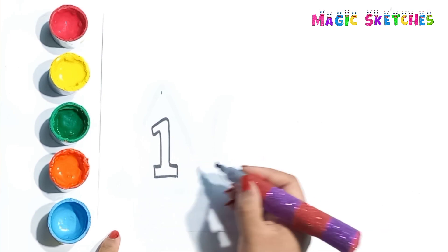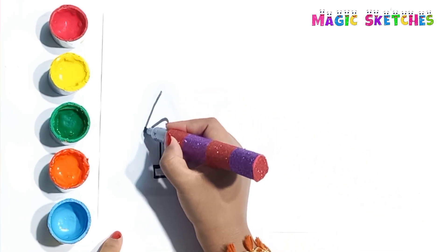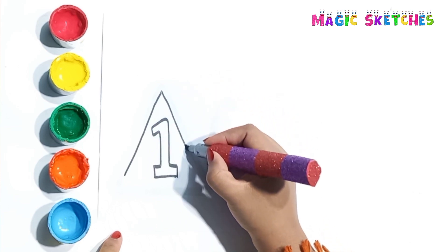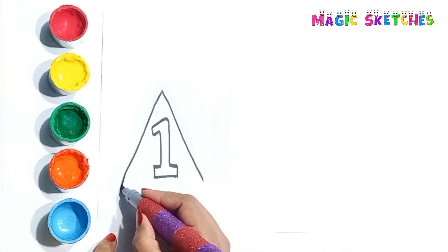First I am drawing triangle. Let's draw number 1 on it. Please try to draw shapes with me. It is a triangle.